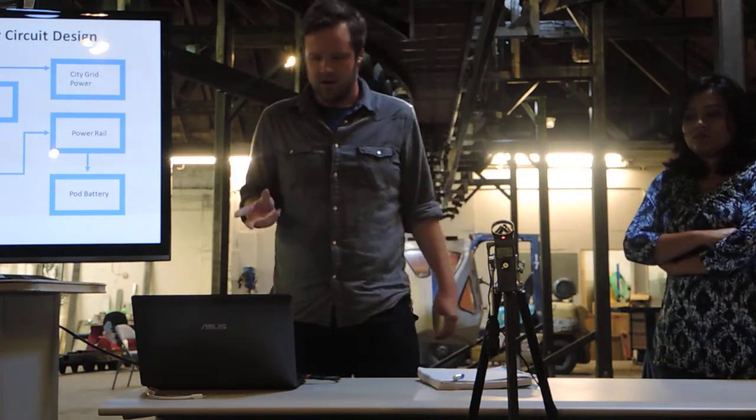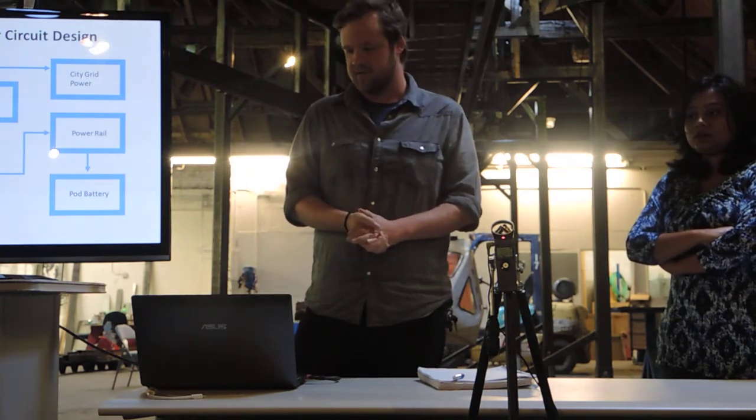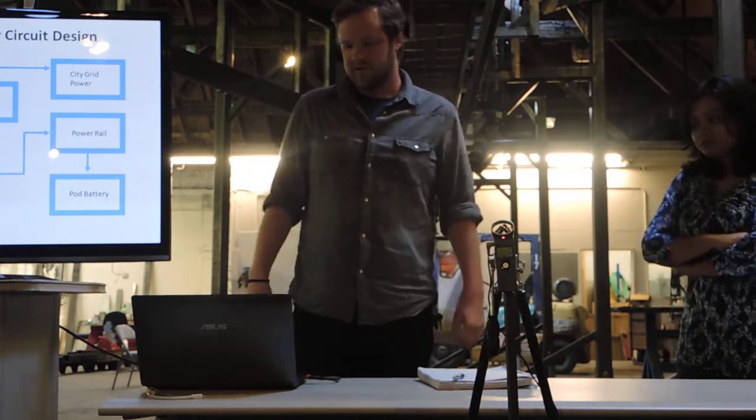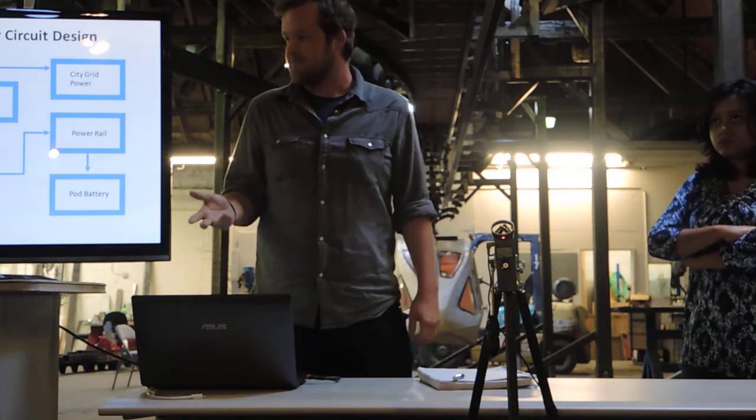This is a block diagram of the system that we have in mind to essentially send power to these cars. Now you'll notice we've got solar cells. We're going to be sending that energy into a DC-DC booster and or converter, probably a booster based on my previous experience using solar cells.